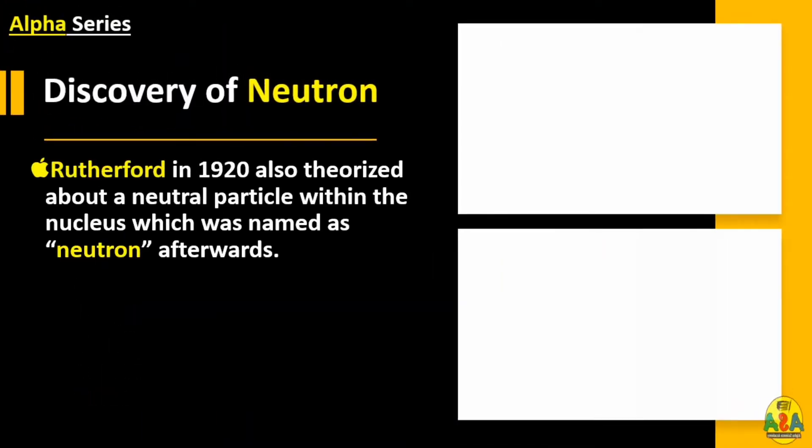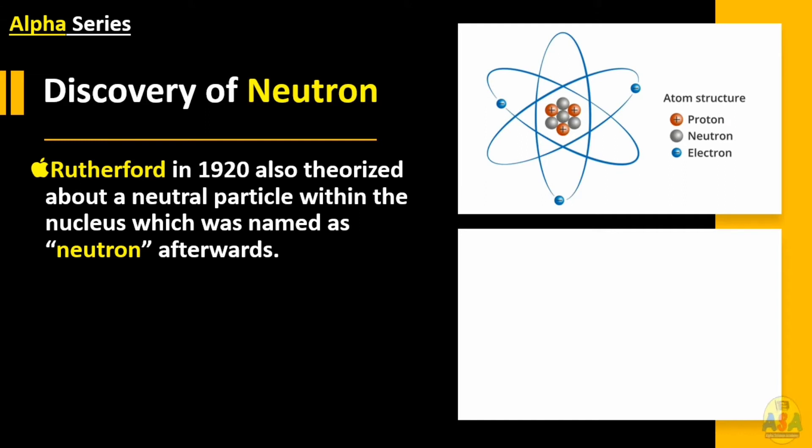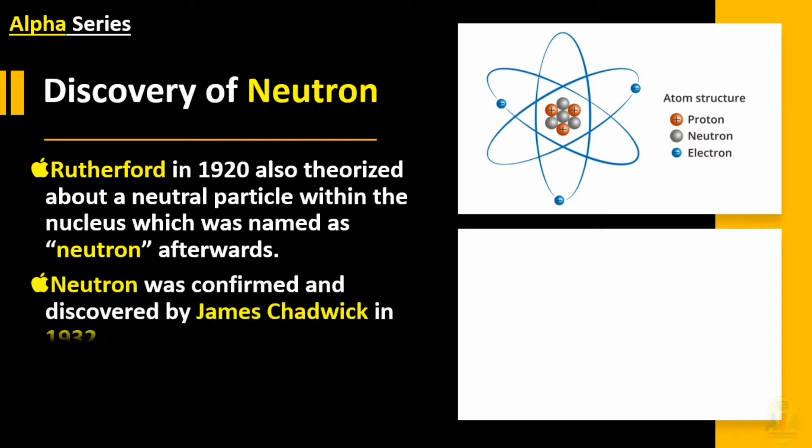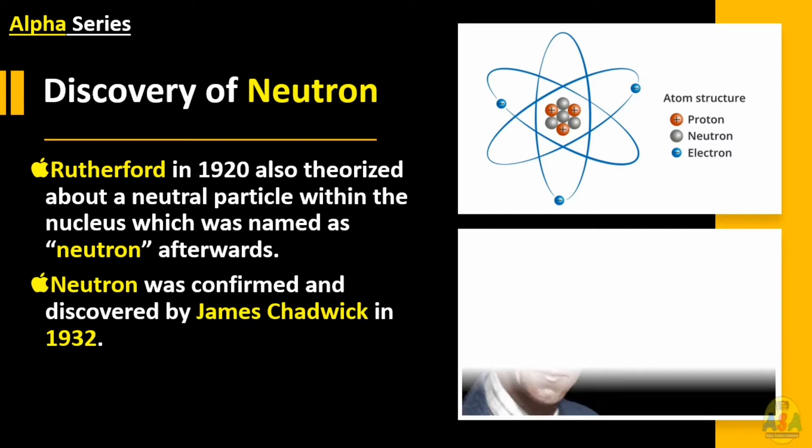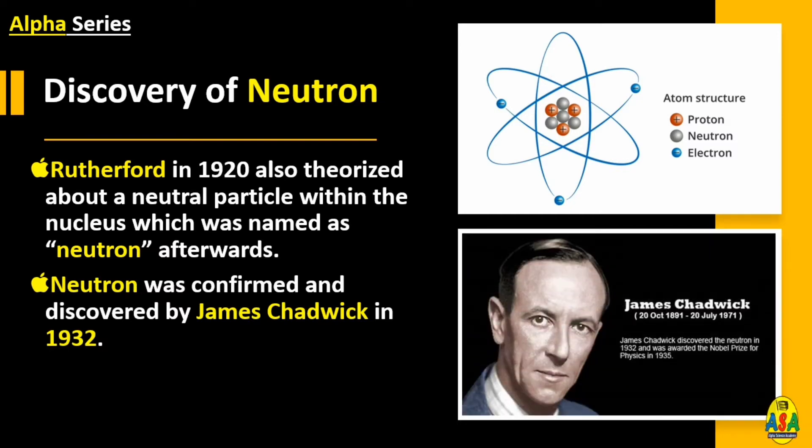Rutherford in 1920 also theorized about a neutral particle within the nucleus which was named neutron. Later on, neutron was confirmed and discovered by James Chadwick in 1932.